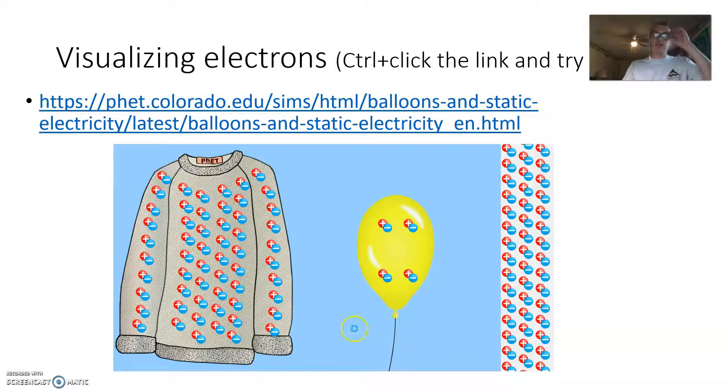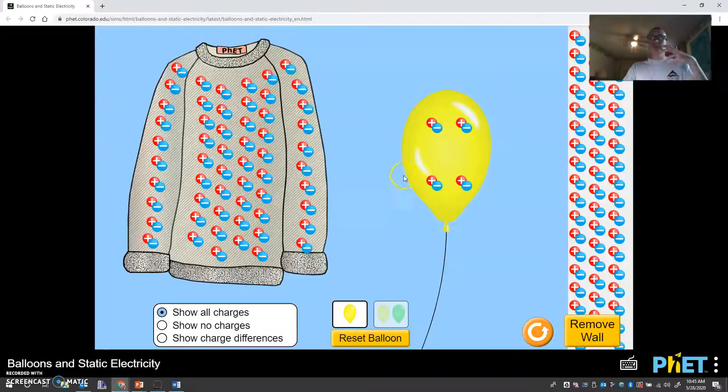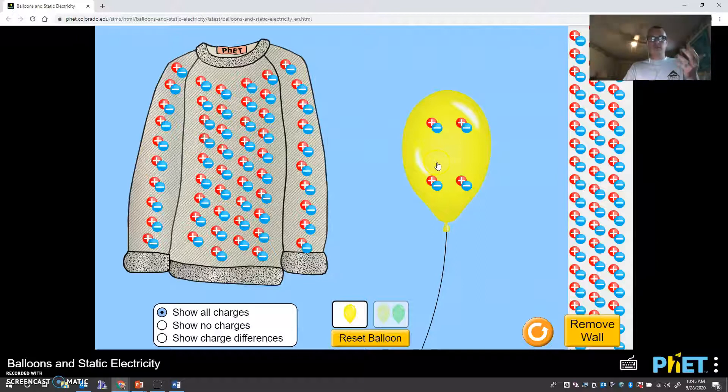You also did this simulation and I'll open it up for you here real quick so we can take a look at it. In this simulation, compliments of PhET from Colorado, we have a sweater and a balloon. And if I move this up onto our screen, you guys can see it. This is showing us where the electrons are going.